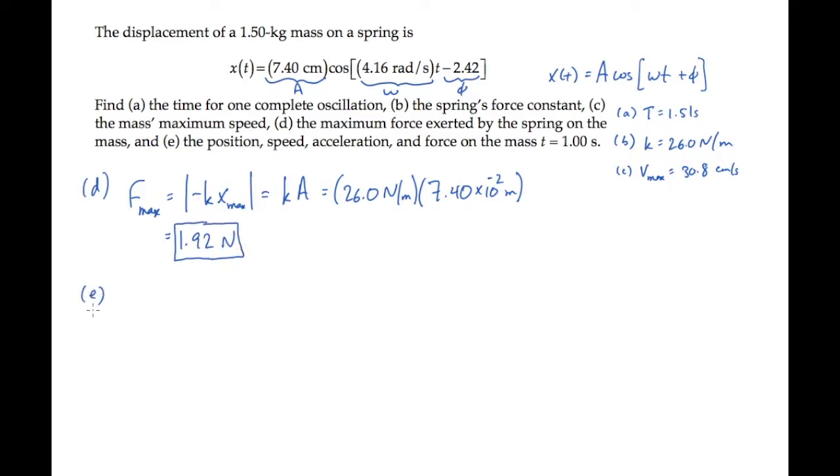Part E asks for us to solve many things, and several of them involve the phase, omega t plus little phi, of the oscillation. So it's useful to calculate this value once, so we'll have it on hand whenever we need it. The phase, capital phi, at one second, is omega times the time, one second, minus 2.42, and that equals 1.74 radians.